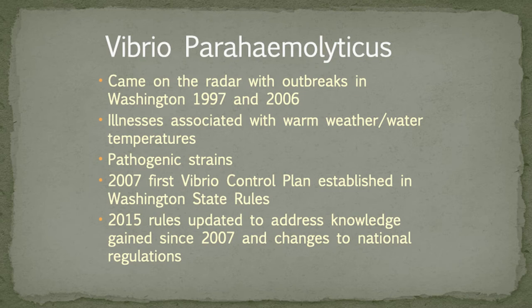Vibrio vulnificus mainly impacts people who are immunocompromised, whereas parahaemolyticus is what they refer to as ordinarily injurious — essentially everybody's vulnerable to it, which makes it more challenging to regulate. Illnesses are associated with warm weather and water temperatures and in particular pathogenic strains. Unlike biotoxins, we haven't been able to crack the nut of monitoring for Vibrios in the environment and setting levels that trigger growing area closures. 2007 was when our first Vibrio control plan was established in Washington State rules, and then those were updated in 2015 based on knowledge gained since 2007 and changes to the national regulations.